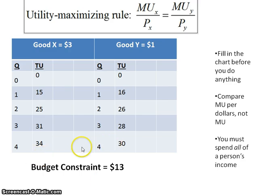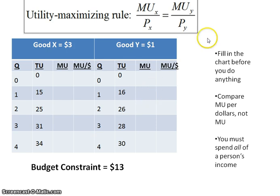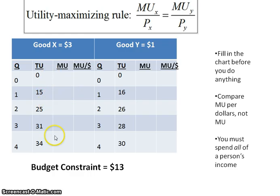When given a problem like this, the first thing you should do is create a table to fill in the numbers, because you'll need them to answer the questions. It's better to have those before attacking the multiple choice problems. Pause the screencast and fill in the chart so you can compare the marginal utilities per dollar. Remember, to solve for marginal utility, look at the change in total utility at each unit.